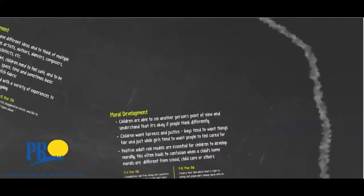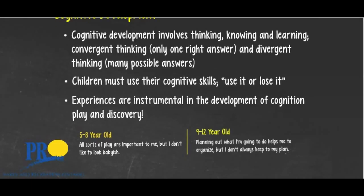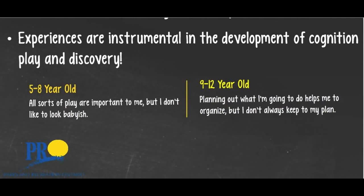What about cognitive development? Cognitive development involves thinking, knowing, and learning — convergent thinking, where there's only one right answer, and divergent thinking, where there are many possible answers. Children must use their cognitive skills — use it or lose it. Experiences are instrumental in the development of cognition through play and discovery. The brain is capable of many things, but it's extremely important that it makes new and frequent connections. Cognitive development does not have to mean providing lessons or doing homework — it's simply providing opportunity for play and interaction.